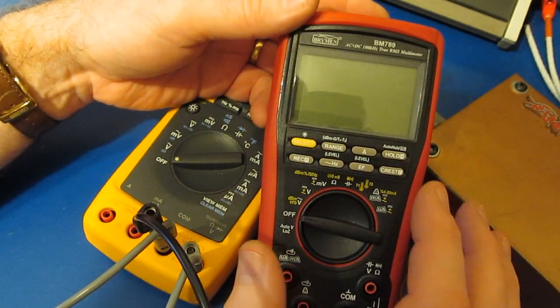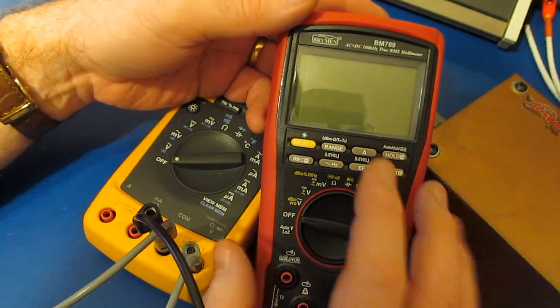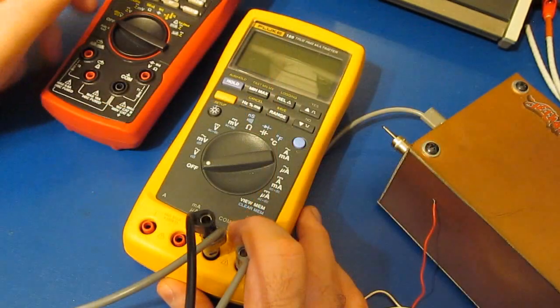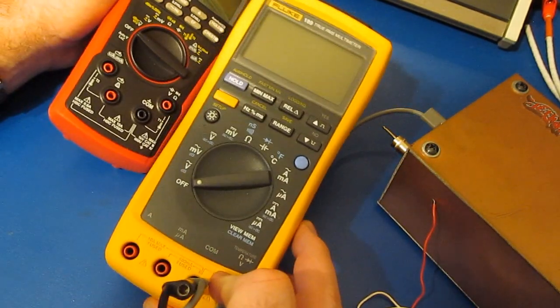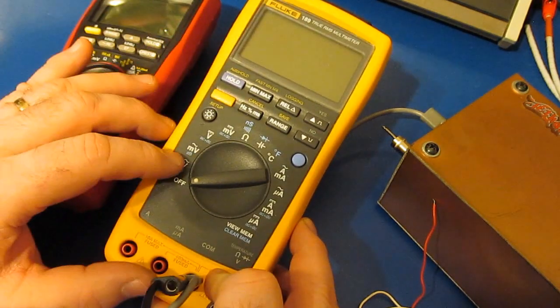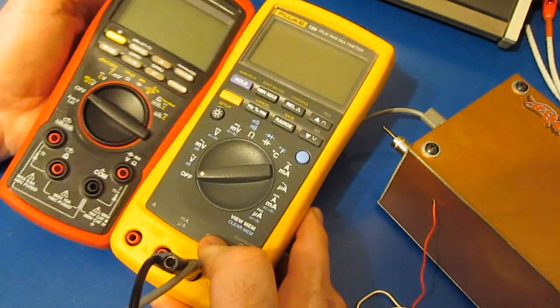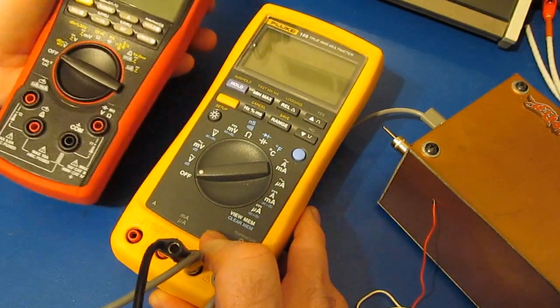I went ahead and ran a similar test on several other meters that I have to demonstrate that that problem wasn't unique to the 789. That led to a side discussion about the Fluke 189 that doesn't exhibit this particular problem. And that's because the millivolt AC input on this meter is AC coupled where all the other meters that I had looked at are DC coupled.